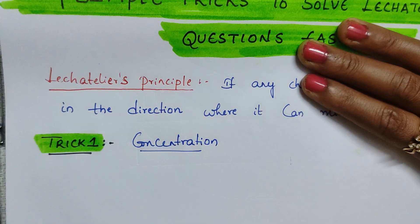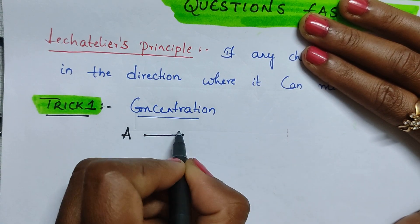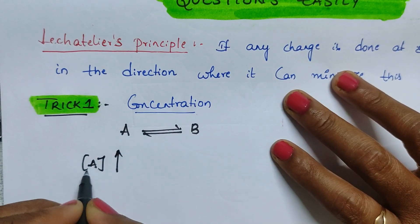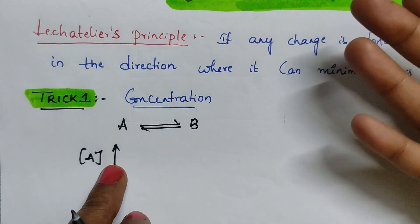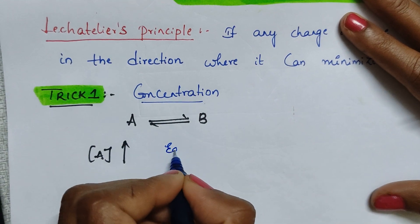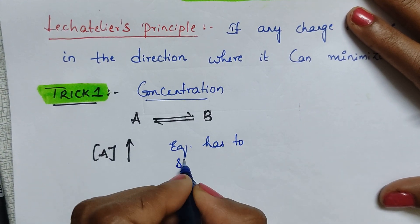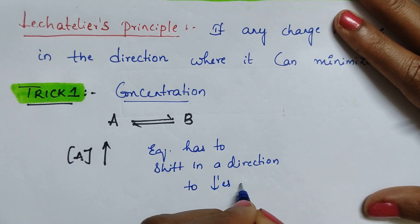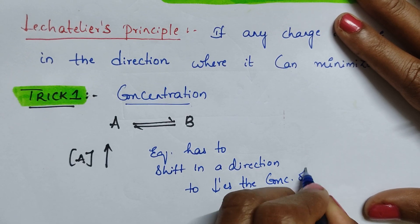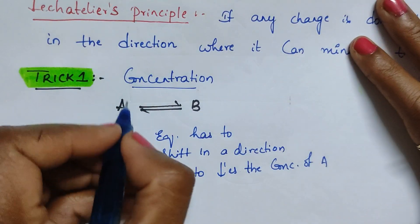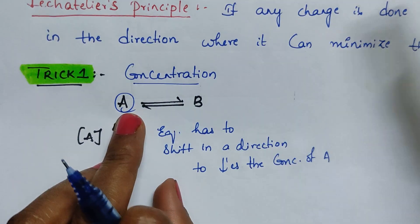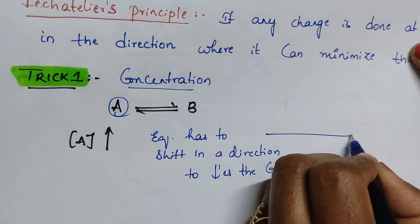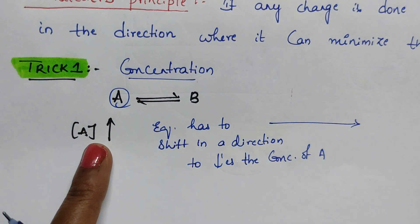Suppose we have a reaction where A is converting into B. If you increase the concentration of A — I am using square brackets to represent concentration — equilibrium has to shift in a direction to decrease the concentration of A. To decrease the concentration of A, equilibrium goes in the forward direction, because A converts to B and its concentration is decreased.